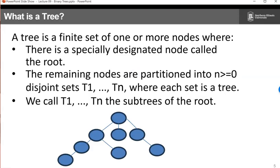So what is a tree? A tree is a finite set of one or more nodes where there's a special node called the root, which would be this guy right here at the top. The remaining nodes are partitioned into some n number of nodes, n number greater than zero, of disjoint sets T1 through Tn, where each set is also a tree. We call T1 through Tn the subtrees of the root, and each is a tree in its own right.